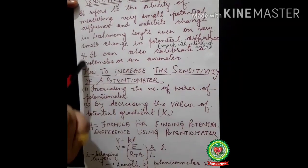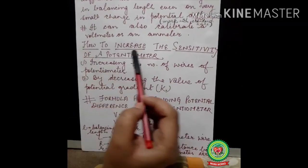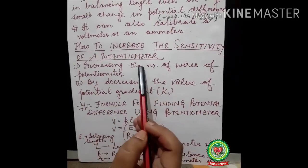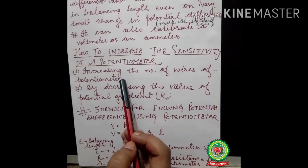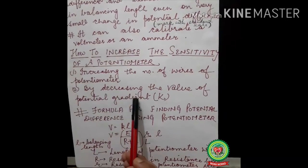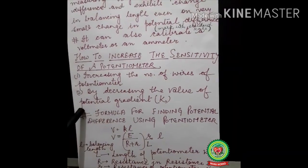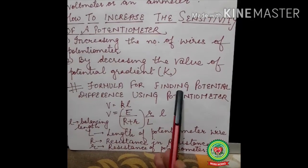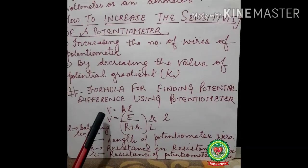Next is how to increase the sensitivity of a potentiometer. We can increase it by increasing the number of wires of the potentiometer, and second, by decreasing the value of K — that is, the potential gradient.